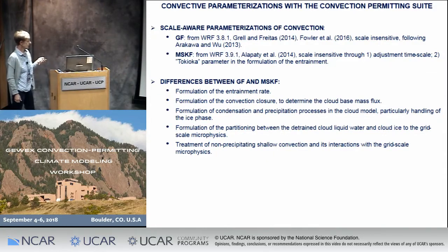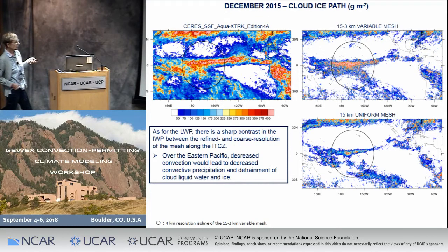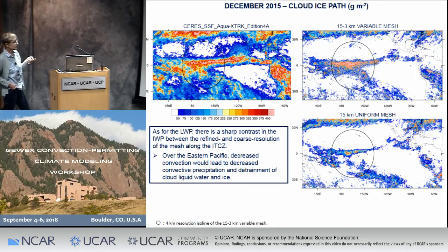In contrast, looking at the cloud ice path, the CERES data shows pretty high cloud ice paths along the ITCZ as well as the eastern Pacific Ocean and the warm pool region. The uniform mesh tends to underestimate the ice path relative to the satellite data, while the variable resolution mesh where grid scale microphysics is dominant does a much better job simulating what the satellite observed — although it also appears to be somewhat overestimated.